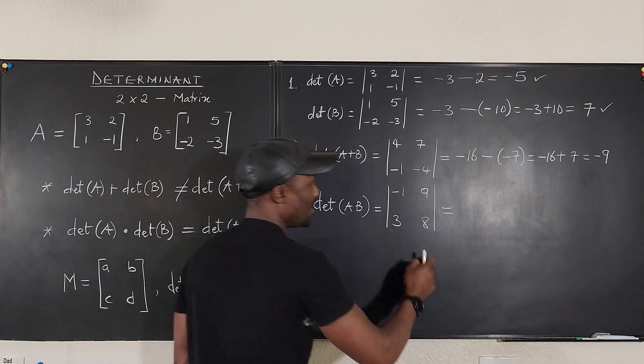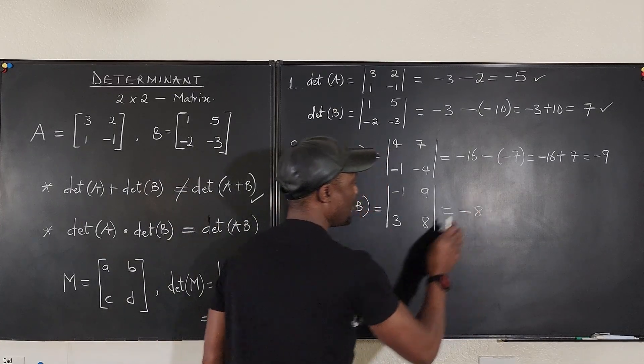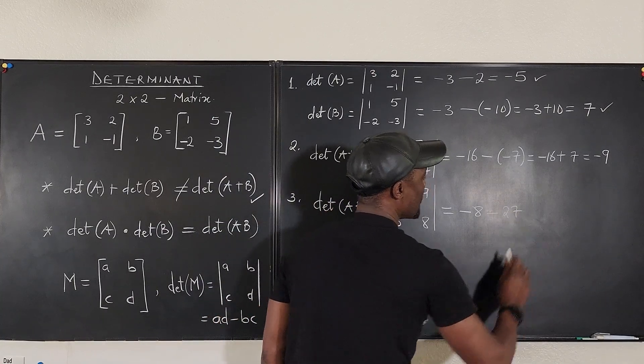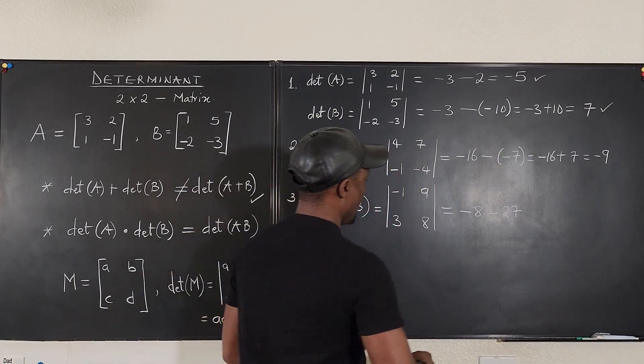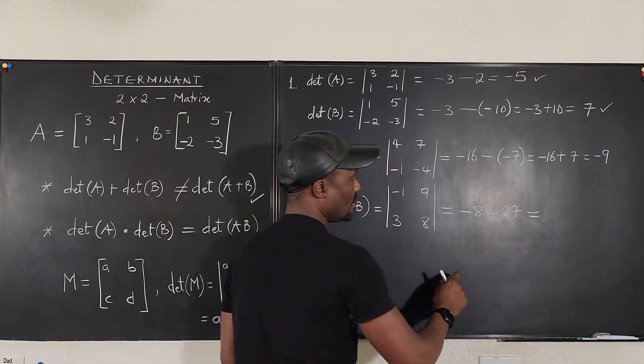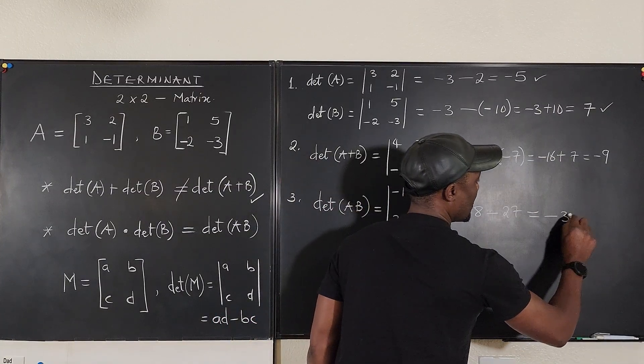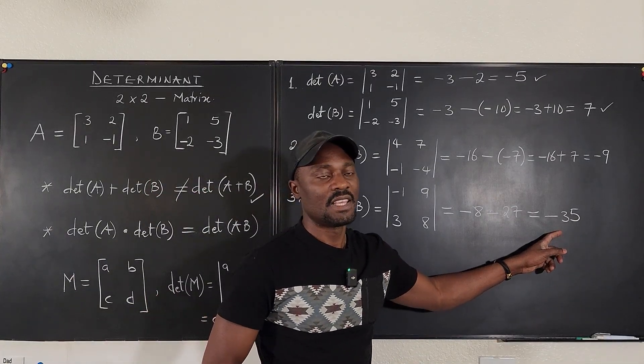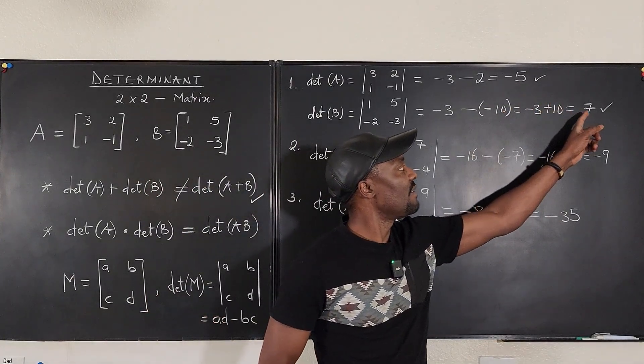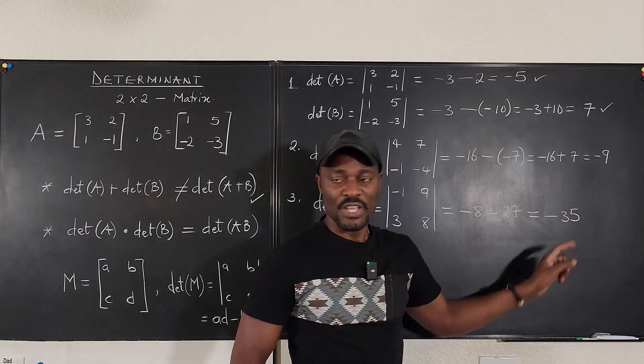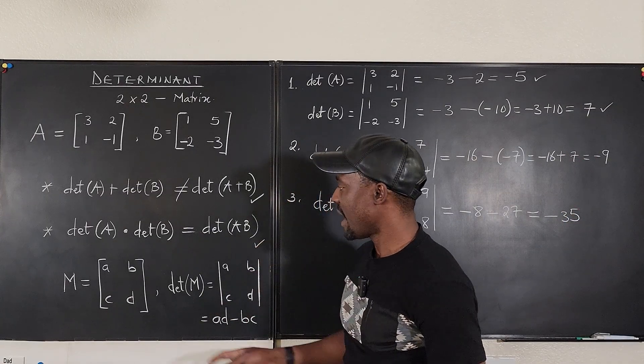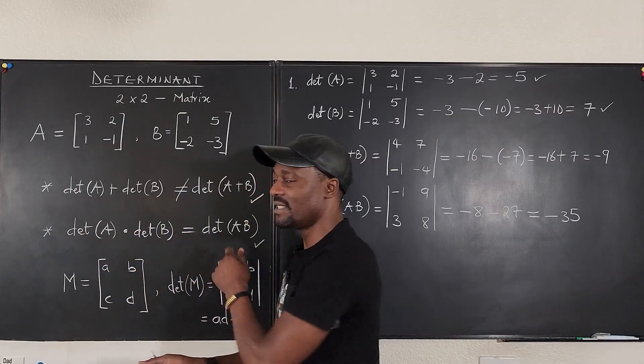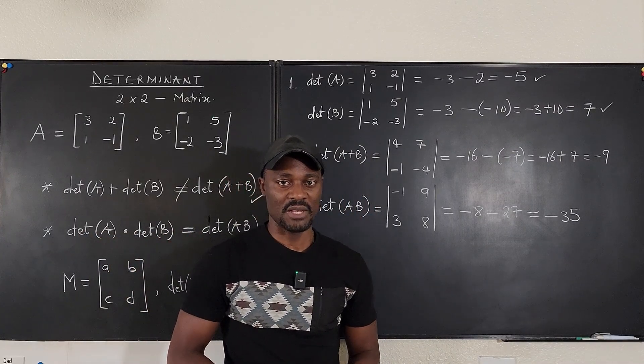Now what's the determinant? We do the same thing. It's minus 8. If you multiply this to minus 3 times 9, which is 27. This is equal to minus 35. It looks like minus 35 is minus 5 times 7. It justifies the second claim that the determinant of the first times the determinant of the second is the determinant of the product of the matrices.